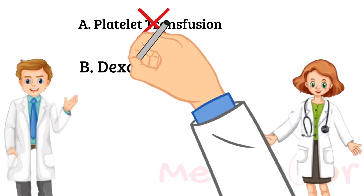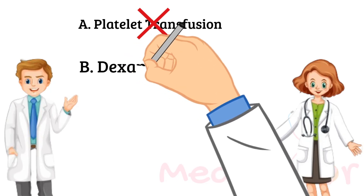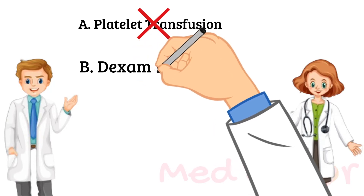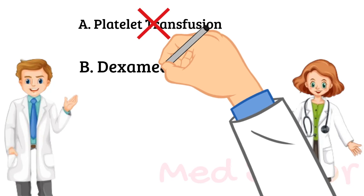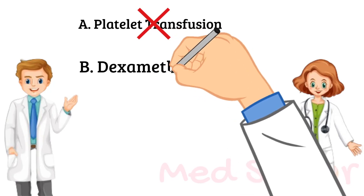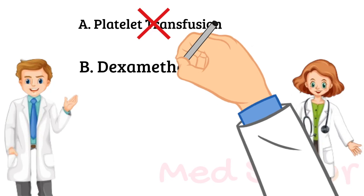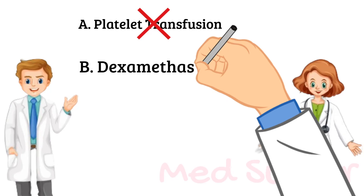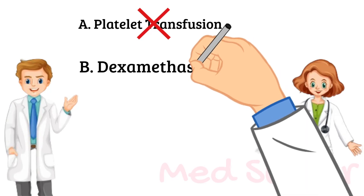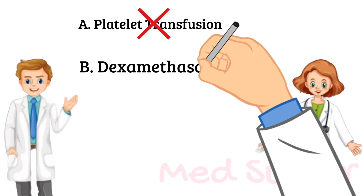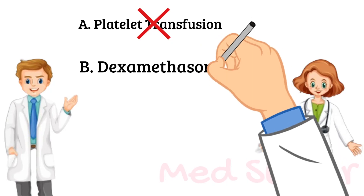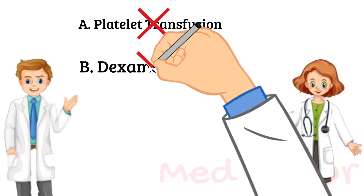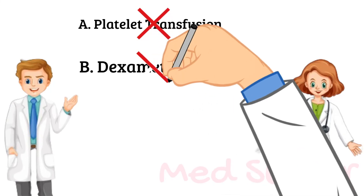Why not just give dexamethasone? The role of corticosteroids in obstetrics is to accelerate fetal lung maturity in a woman expected to deliver prematurely. However, beyond 34 weeks gestation, the fetal lungs are already mature and there is no need to give corticosteroids. And of course, I'm not going to give dexamethasone and just wait in such a severe case. So this is another incorrect answer choice.